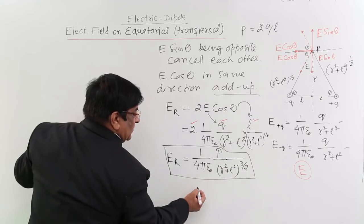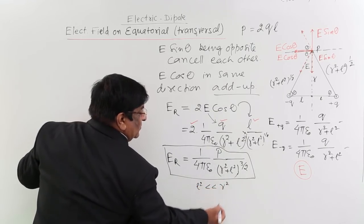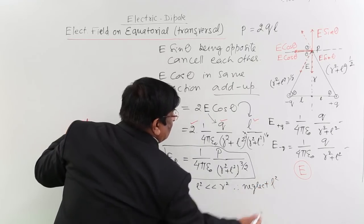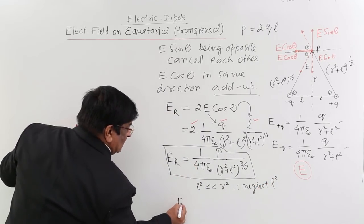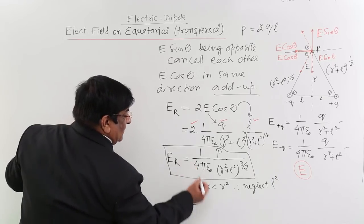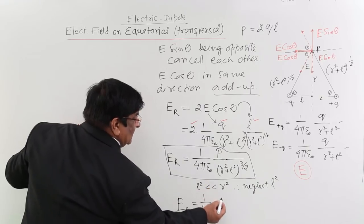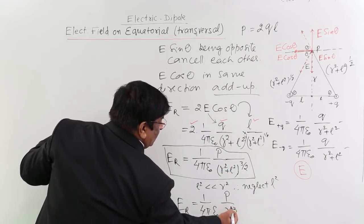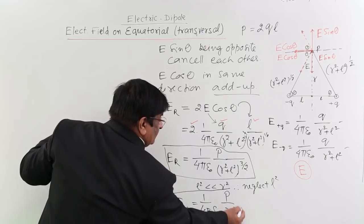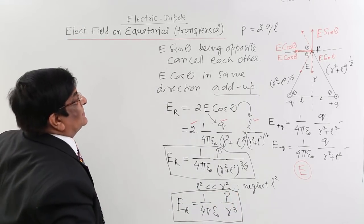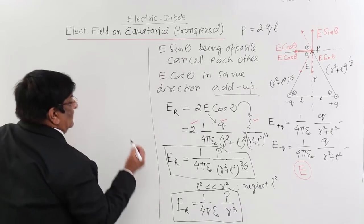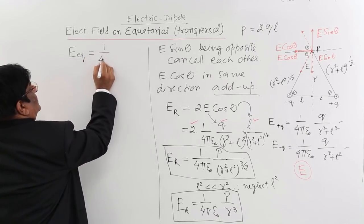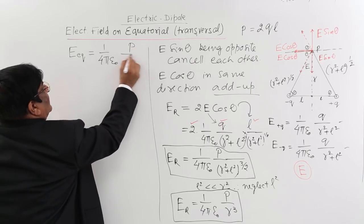If we simplify further, for a short dipole L² is very small compared to R² and can be neglected. Therefore R²+L² ≈ R², and (R²)^(3/2) = R³. So the electric field on the equatorial line simplifies to E equatorial = (1/4πε₀) × P/R³.